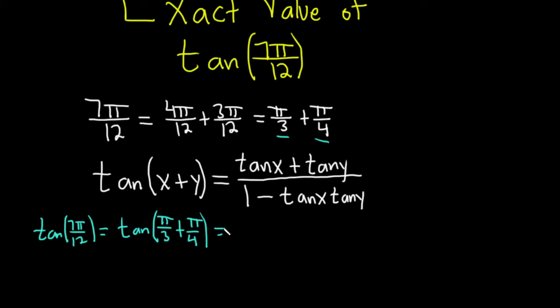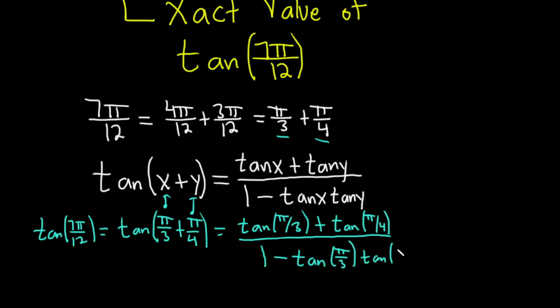And now we're just carefully going to plug everything into the formula. Our x is π over 3 and y is π over 4. So this will be tangent of π over 3 plus tangent of π over 4, and that's all being divided by 1 minus tangent of π over 3 times tangent of π over 4. Just being really careful, let's check: x is π over 3, y is π over 4. Everything looks okay. Always be really careful with these problems, there's just a lot of tangents everywhere and it's easy to mess up.